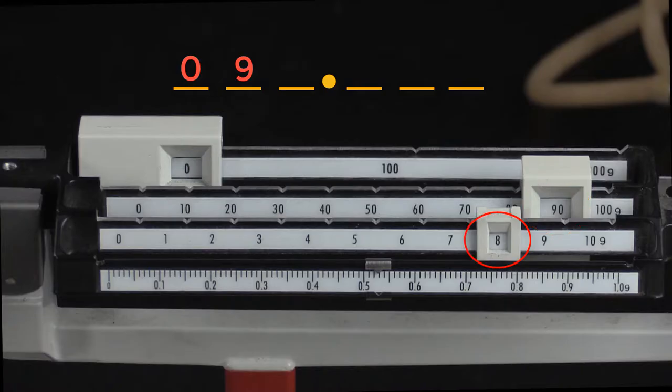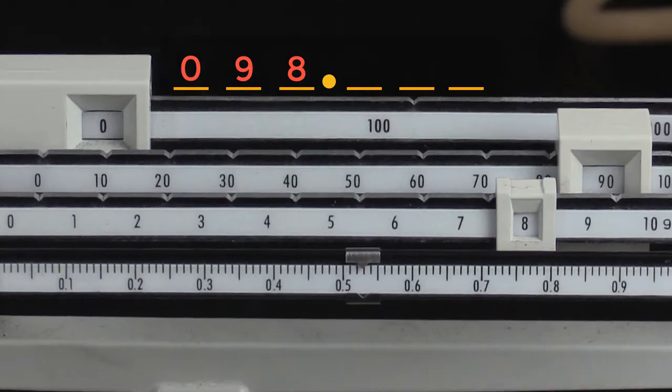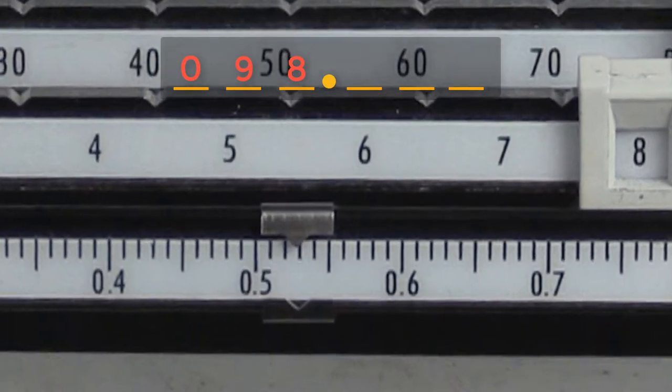We do the same for the ones place beam, and we see that it is in the eight slot. So we put an eight in the ones place for our measurement. Now for the decimal places.